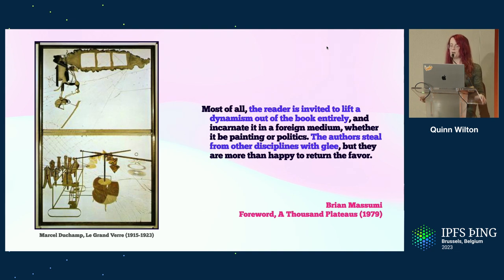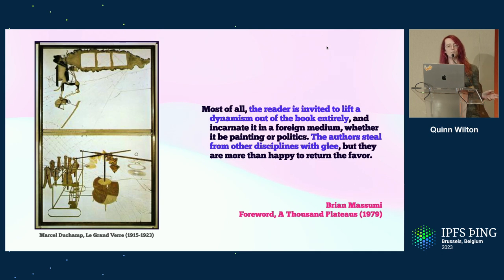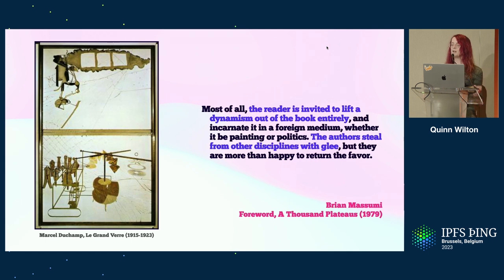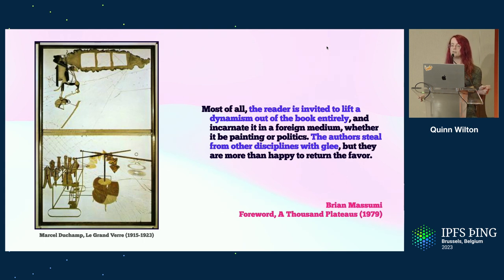Deleuze and Guattari introduced the word rhizome in A Thousand Plateaus. They don't define it either, though — they let its meaning unfold over the course of almost 600 pages. That piano score by Busotti appears without explanation in the book, and I think part of the reason why is the way it hybridizes two different mediums, painting and music, into something that isn't quite described by either.